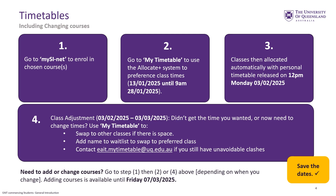You can see the window available to you in the coming semester for when this preferencing can take place. Once preferencing has closed, step three happens: classes are allocated automatically and you will get a personal timetable sent to you via email.